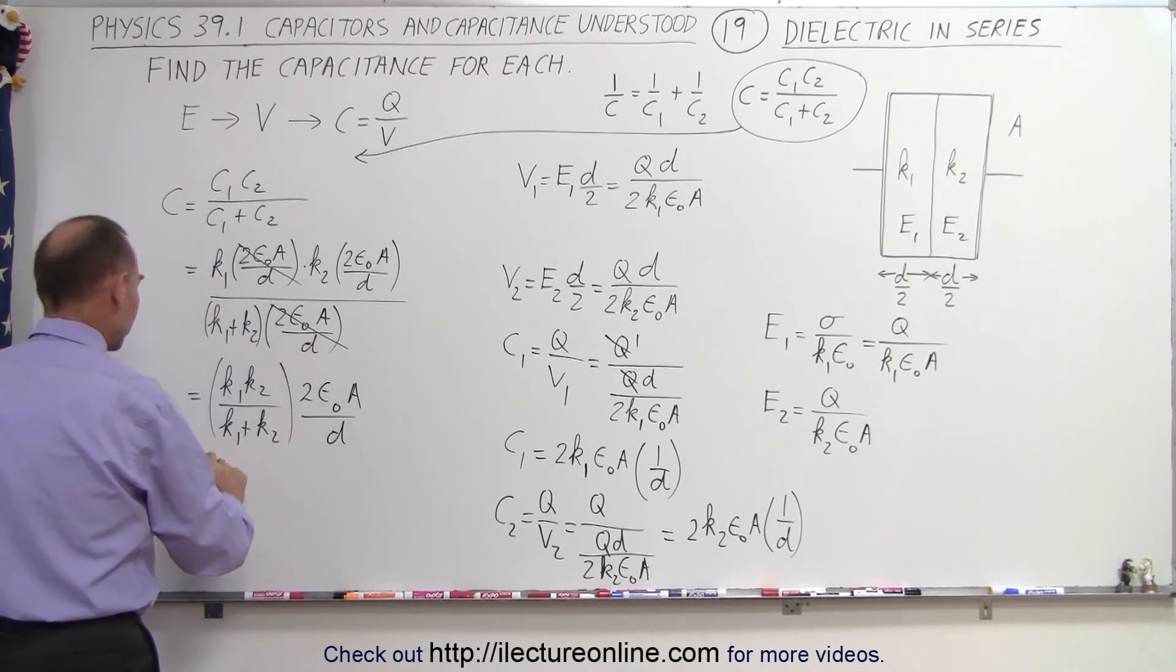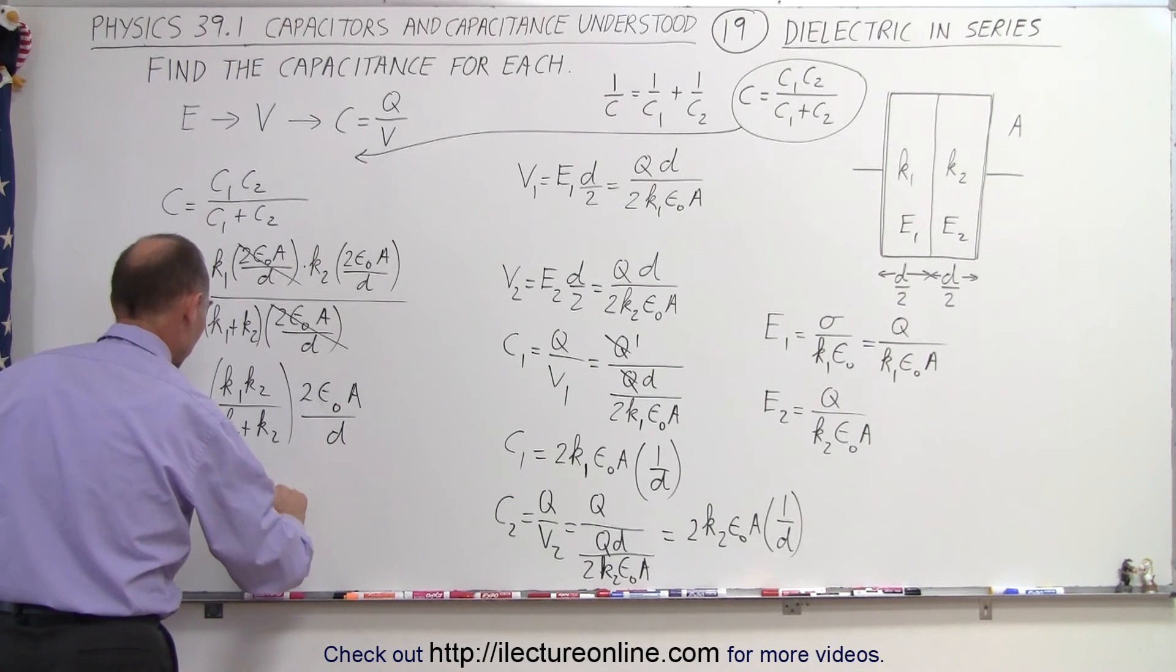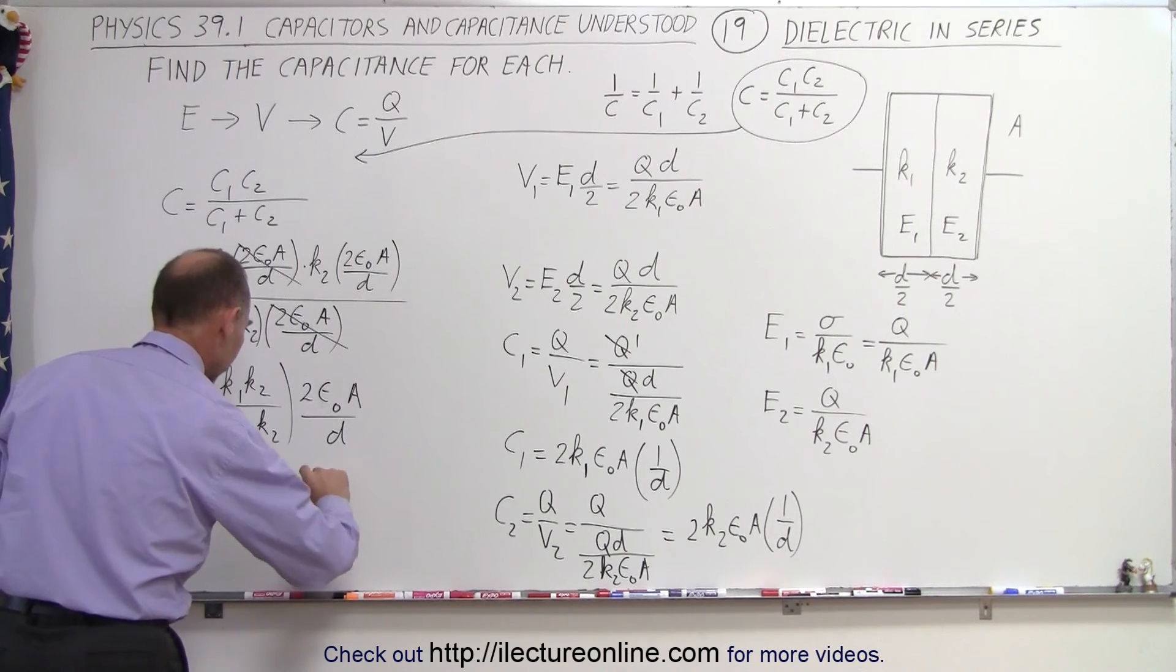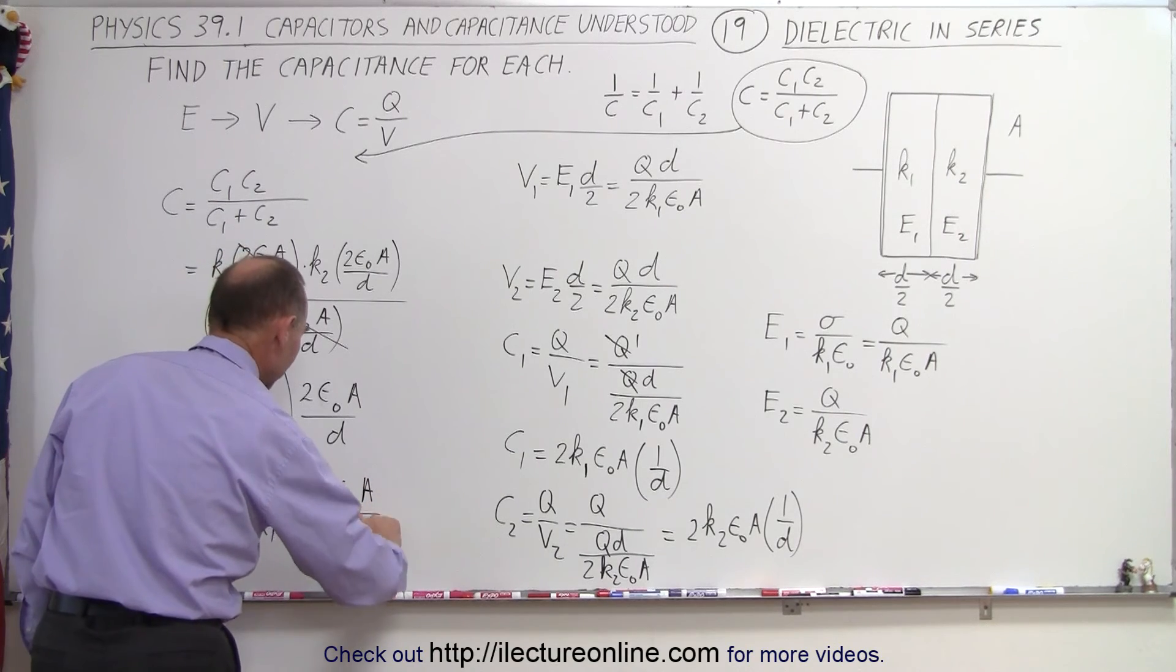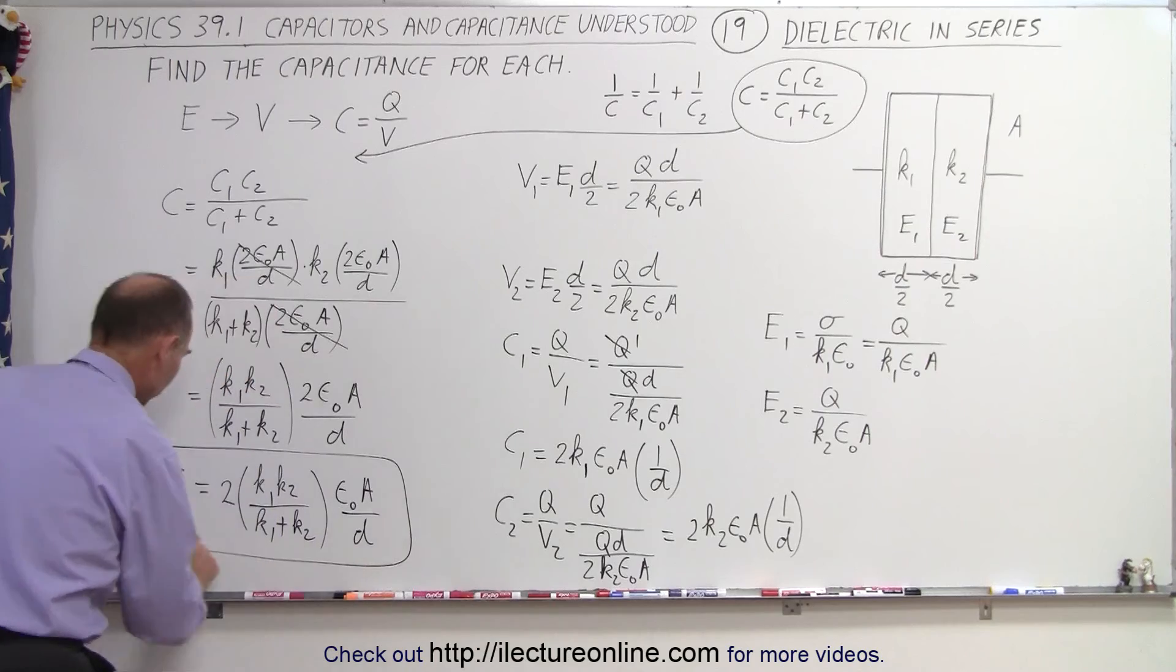And if you want to separate that, you may want to write it as 2 times the quantity k1 k2 over k1 plus k2 times epsilon naught A over d. So you can see, this is how we can now interpret that.